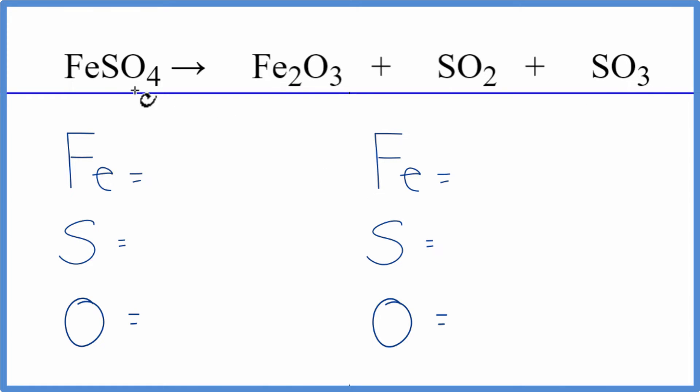So to balance it, let's count the atoms up on each side. We have one iron, one sulfur, and four oxygens.